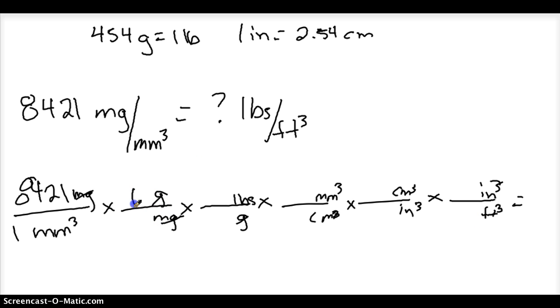All right, so grams to milligrams, you know that for every one gram, there are 1,000 milligrams. Okay, pounds to grams, 454 grams for every one pound.